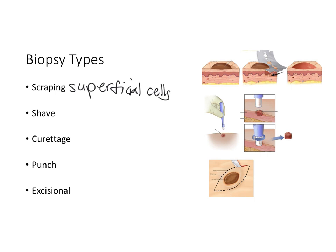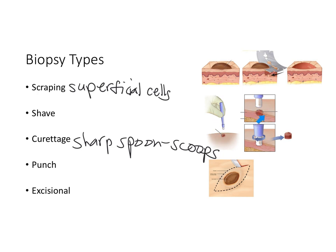Curettage uses a curette, which is kind of like a sharp spoon, where tissue is scooped out. A punch biopsy is used for a larger lesion where we just want to get a small sample to examine — the device is put into the skin, twisted around, and a small core of skin is taken out, kind of like a little apple core.